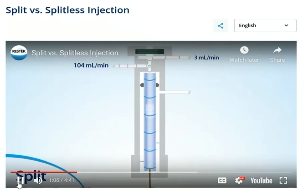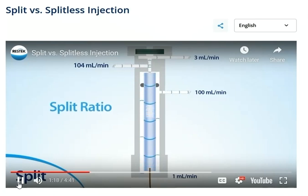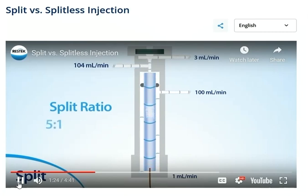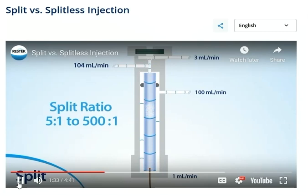A fraction of the gas — 1 mil per minute — flowed into the column, but most — 100 mils per minute — is swept away via the split vent. This ratio, the split ratio, is determined by the user before starting the analysis. Split ratios typically vary between 5 to 1 to 500 to 1. The higher the ratio, the lower the amount of sample that enters the column compared to what passes out the split vent.